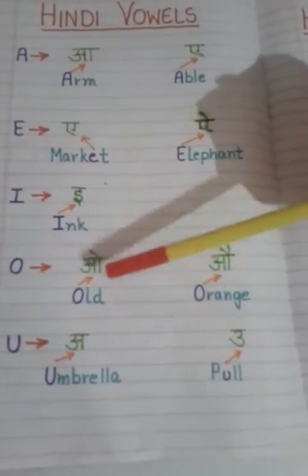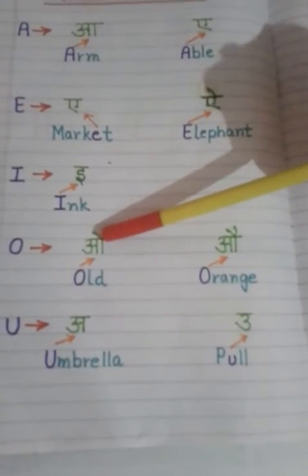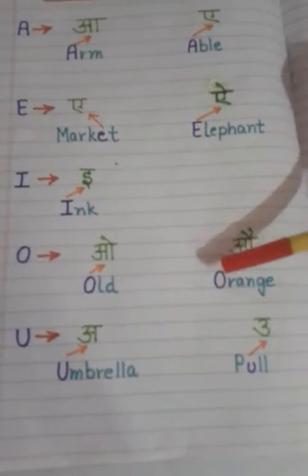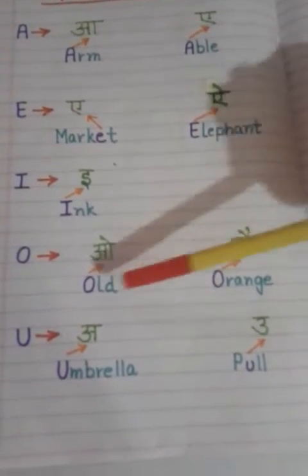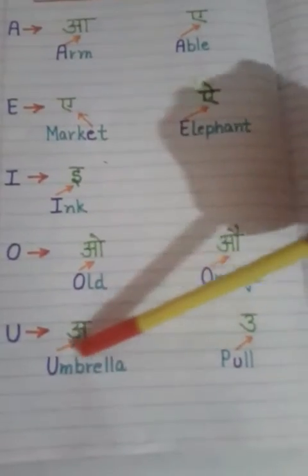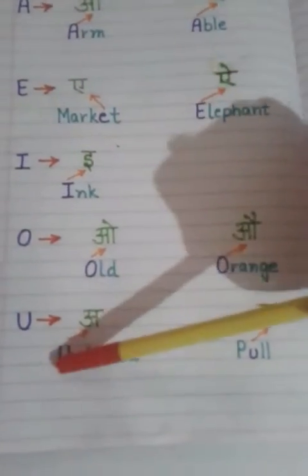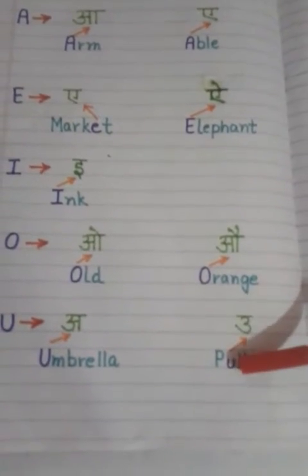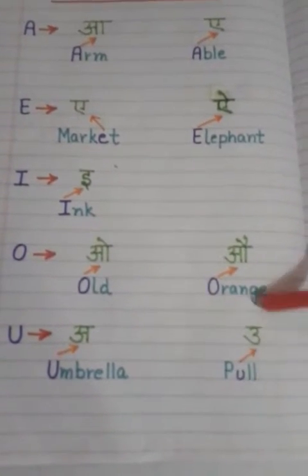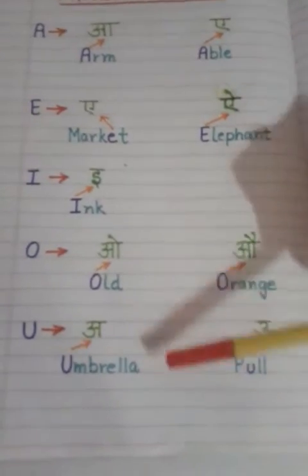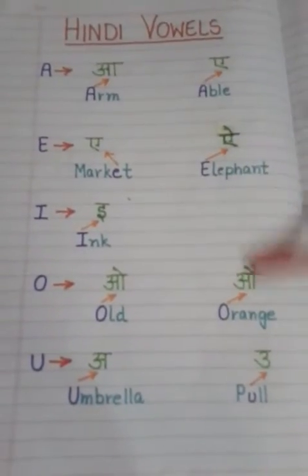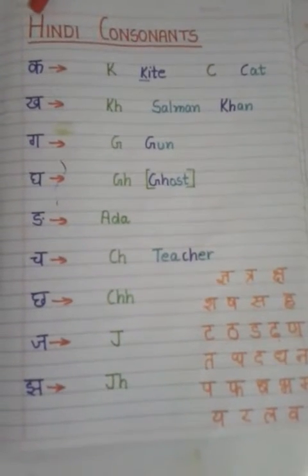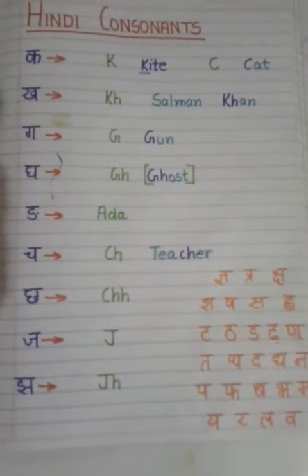For the 'O' sounds, you can use the word 'old' — you utter 'O' there. The word 'orange' also gives the 'O' sound. For the 'U' sounds, use the word 'umbrella' for the short 'u', and the word 'pull' for the longer 'oo' sound. So friends, these are your Hindi vowels.